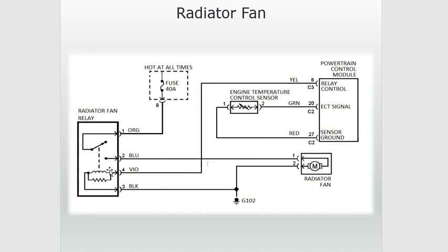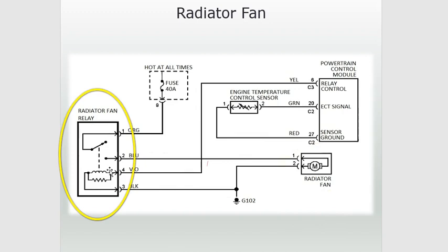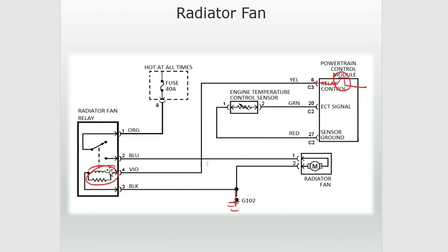Here is a radiator fan. This radiator fan is turned on by a relay, but the relay itself is controlled by a computer. Here's the relay control — this is the output wire. This relay coil needs both a power and a ground in order to turn on. It already has a ground, so on this side we're dealing with a high side driver.